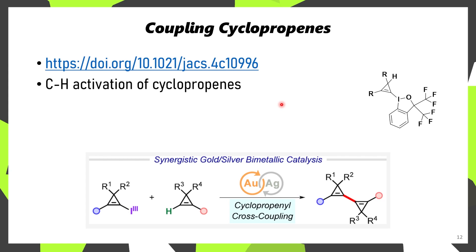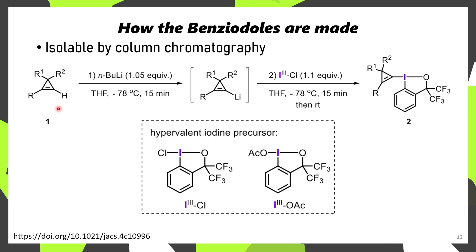The next paper we're going to be discussing is this obscure-looking hypervalent iodine reagent, which is connected to a cyclopropenyl group. Believe it or not, these derivatives can actually be isolated via column chromatography. This hypervalent iodine reagent is able to be coupled with unsubstituted cyclopropenes to afford bis-cyclopropene derivatives. To prepare these reagents, an unsubstituted cyclopropene undergoes lithiation by n-BuLi, followed by reaction with a hypervalent iodochlorine species, which, through the elimination of lithium chloride, affords the corresponding cyclopropene-substituted hypervalent iodine reagent.